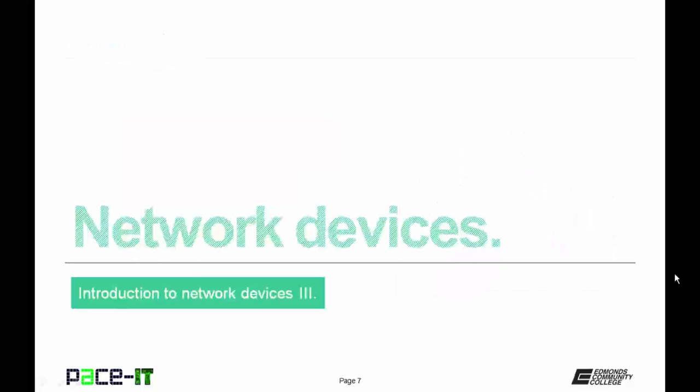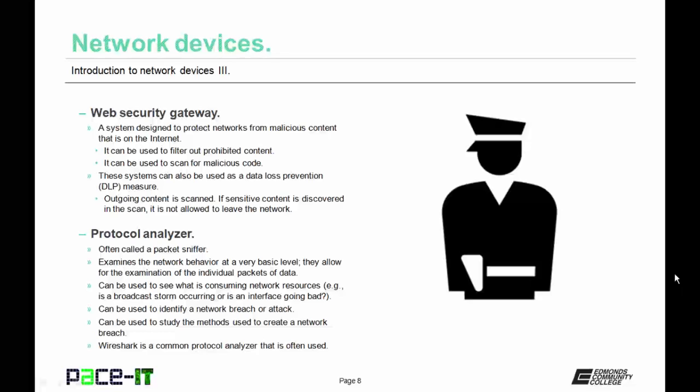Now let's move on to a brief discussion of some network devices. First up is the Web Security Gateway. It's a system designed to protect networks from malicious content that is on the internet. It can be used to filter out prohibited content and to scan for malicious code. In some cases, these systems can also be used as a data loss prevention measure — in these cases, all outgoing content is scanned, and if sensitive content is discovered, it's not allowed to leave the network.